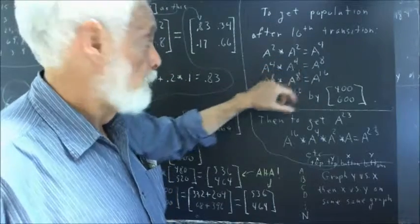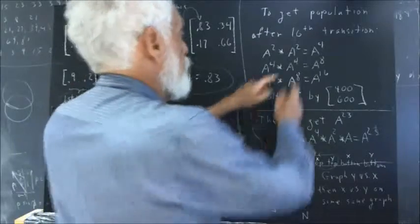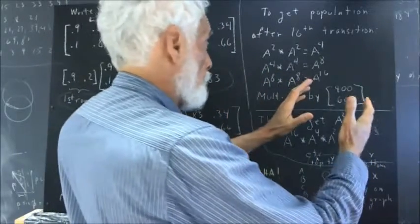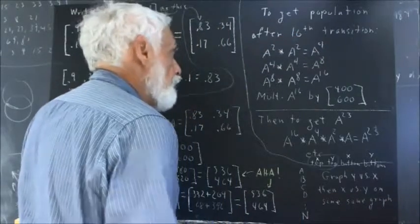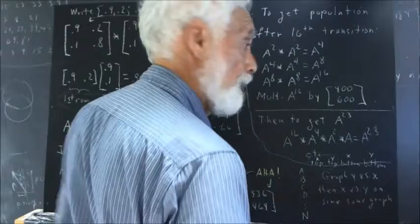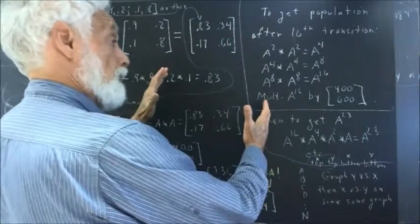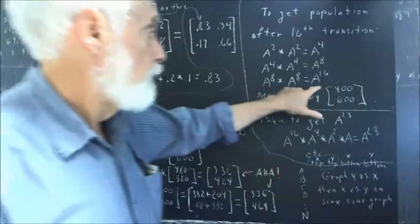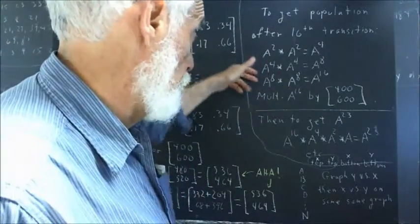Remember, A to the fourth means we've got four of the A matrices, and the other A to the fourth means we've got another four — so we have four and four. That's eight of them, so that's A to the eighth power. Then A to the eighth times A to the eighth: A to the eighth is eight of the original matrix, and another A to the eighth is another eight — that gives us a total of sixteen. So we can easily get A to the sixteenth, and your homework is going to ask you to calculate those.